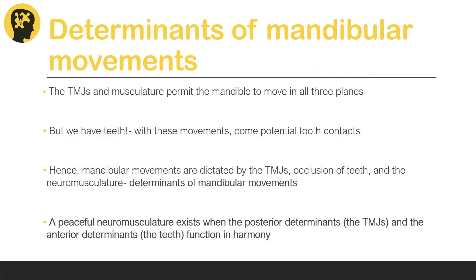We know that the mandible moves in all three planes—it moves up, down, front, back, and side to side, thanks to the TMJ and the muscles.